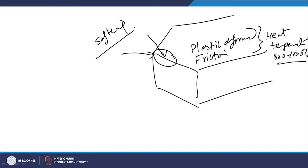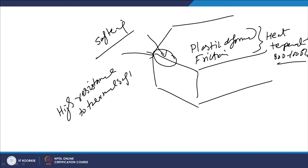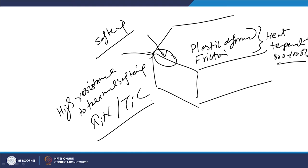It is important that whatever cutting edges of the inserts are being modified, they show enough resistance to thermal softening. High resistance to thermal softening is achieved with the help of developing such coatings like titanium nitride and titanium carbide on the surface of the cutting tool inserts.